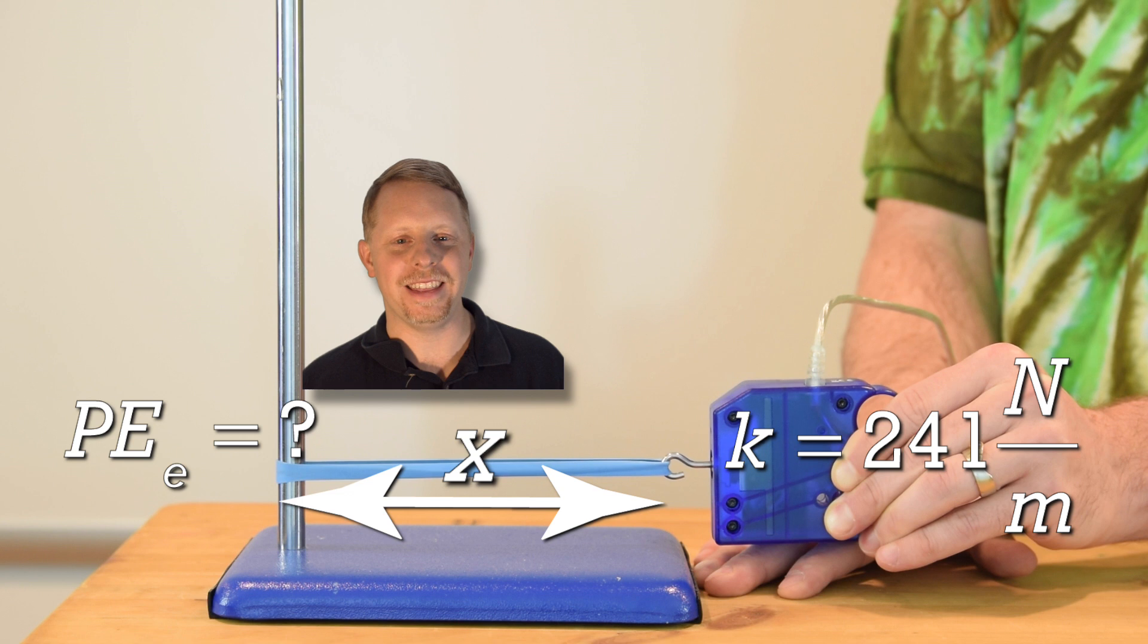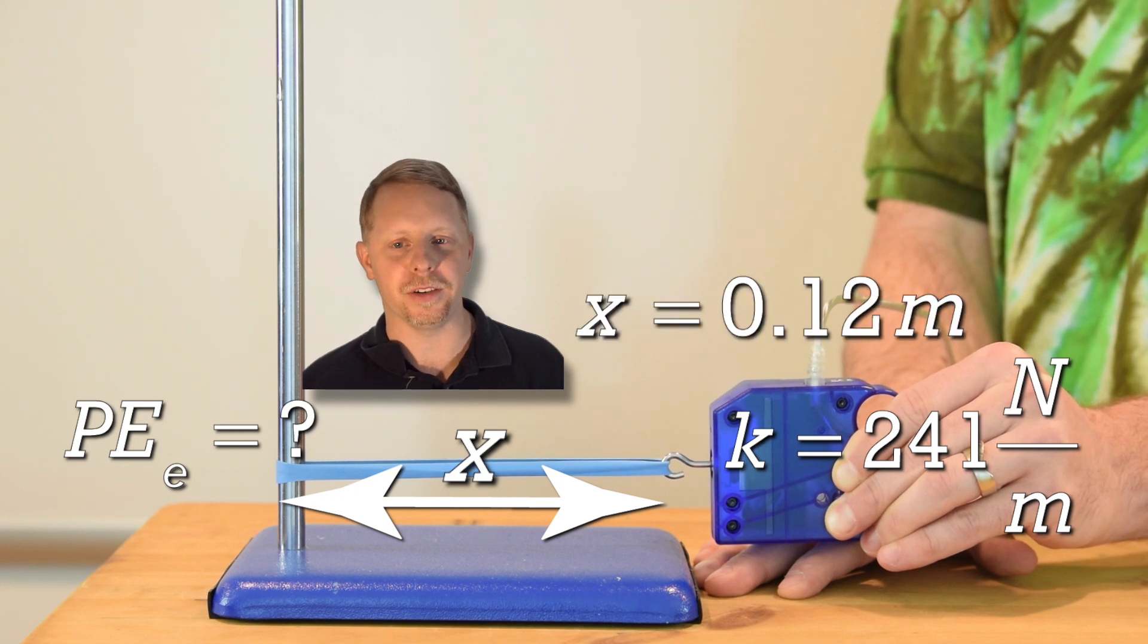I feel like I just learned something I wasn't supposed to yet. Yeah. Let's determine the elastic potential energy stored in the rubber band when it is elongated by 12 centimeters, or 0.12 meters.